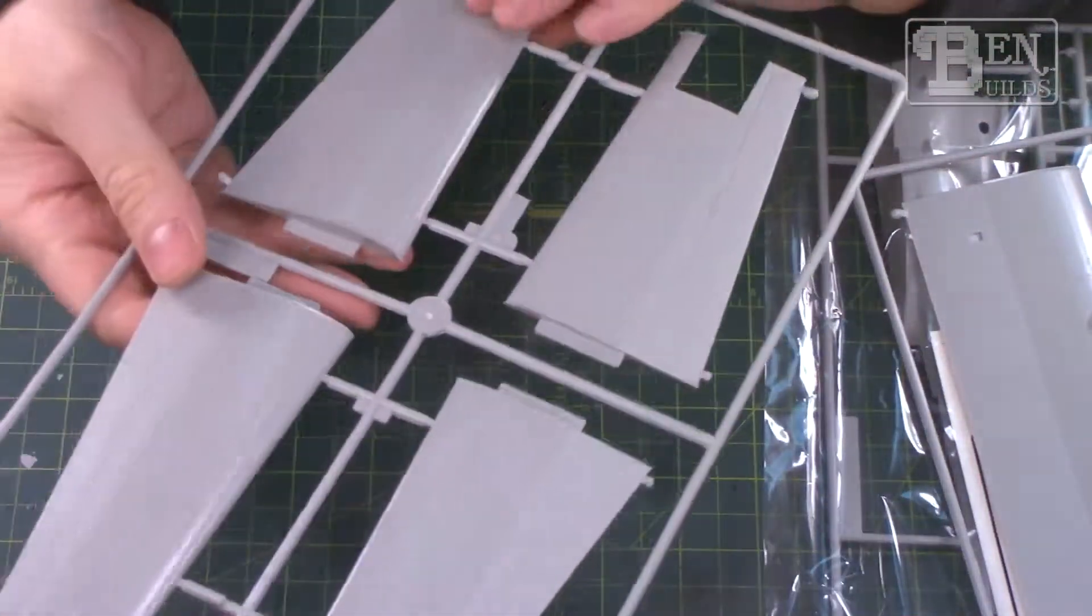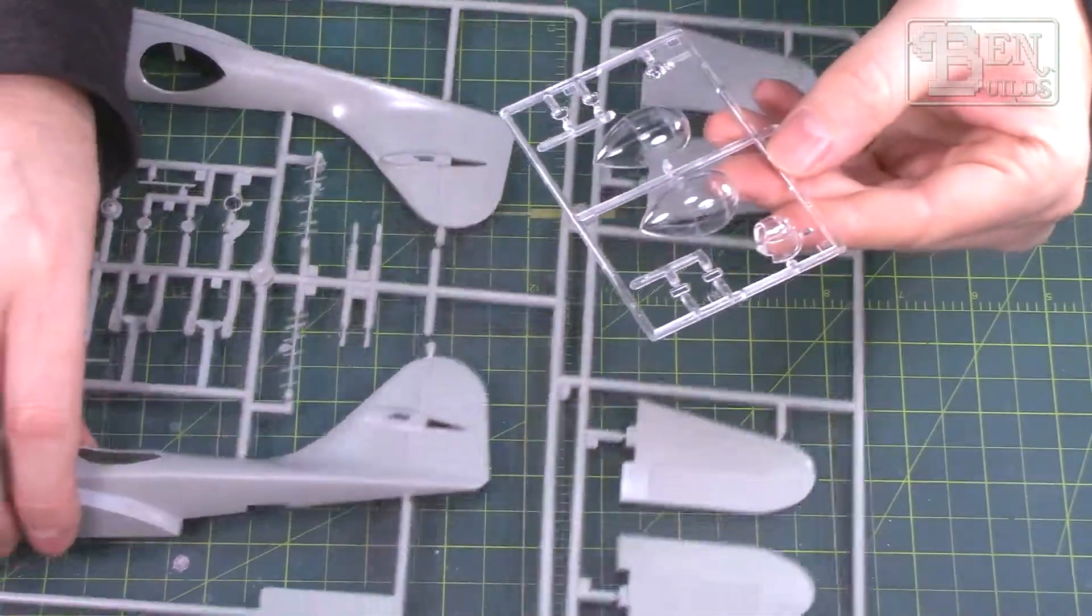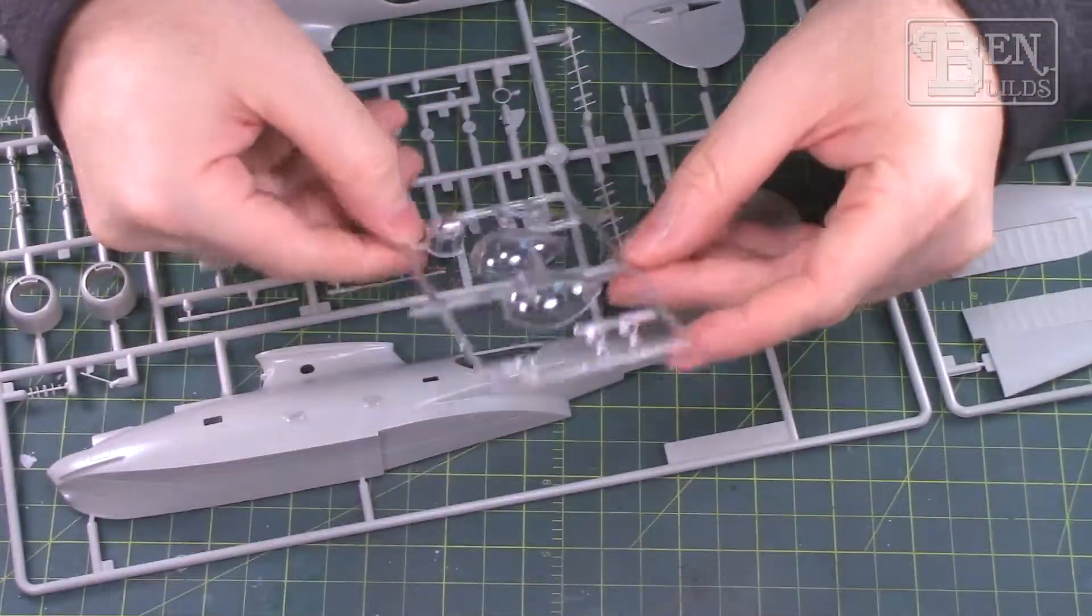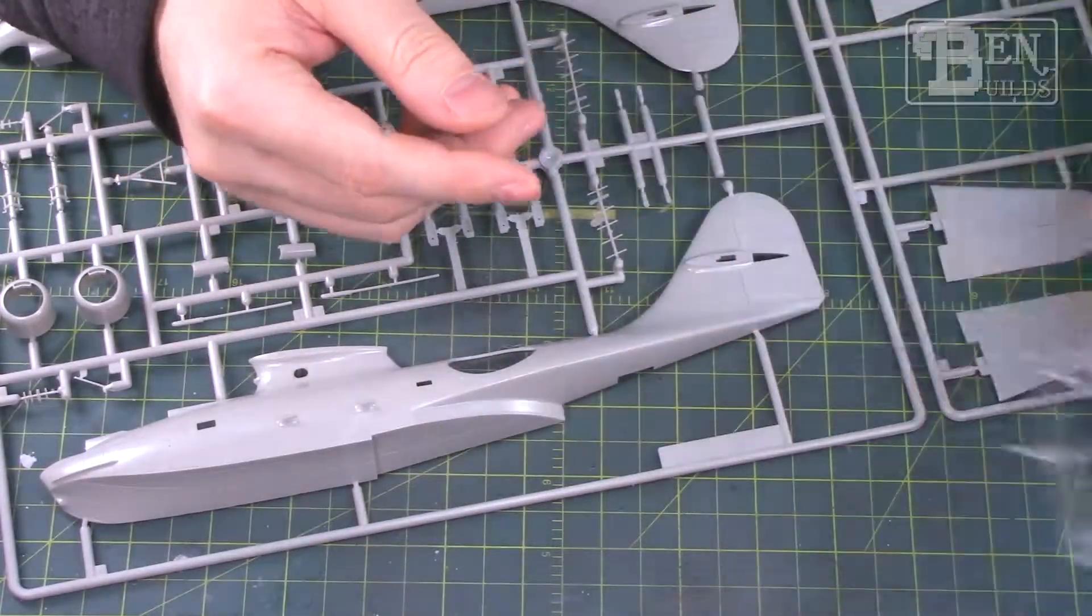Clear parts look good. We've got the observation bubbles here on the sides of the fuselage. Those will just drop right into place somewhere around there. That does allow you to see quite a bit of detail on the inside of that though, so I might have to do some scratch building to make it look a little bit better.